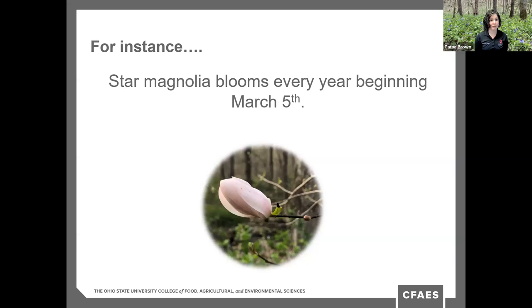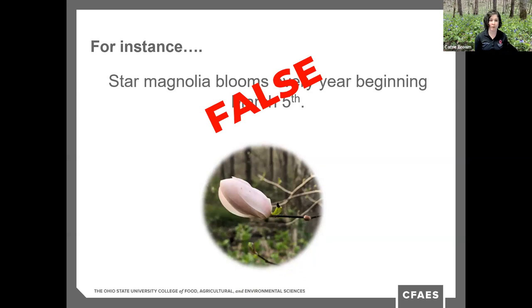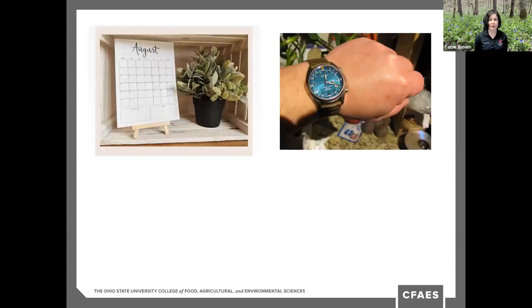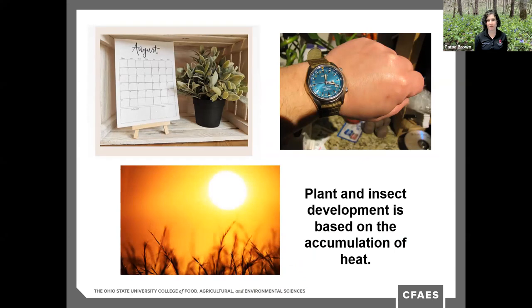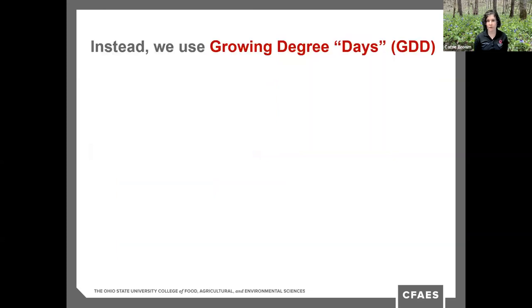For example, star magnolia does not bloom every year beginning March 5th. This year in Columbus they started around that date, but last year they didn't begin blooming until March 18th. And in this year alone, star magnolias have long since started blooming in southern Ohio while those flower buds are still tight in northern counties. Our plants aren't watching a calendar — plant and insect development is based on the accumulation of heat.